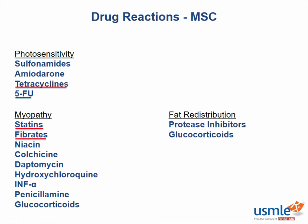When you hear about accumulation of fat in the central body, like on the back of the neck and the belly, think of Cushing's syndrome. But if it's drug-related, think of an HIV patient on protease inhibitors or a patient taking corticosteroids.